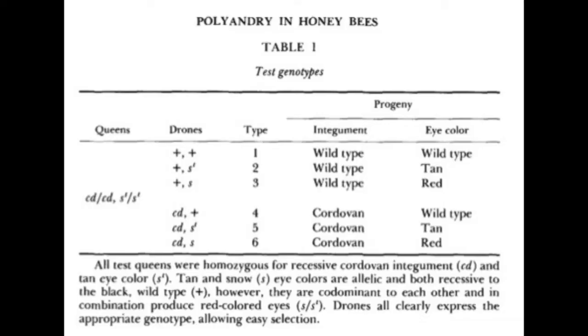Harry Laidlaw proves that polyandry in honeybees is a major cause of intracolony genetic diversity in his study. He tests the genetic variation by measuring the genetic relationship among the honeybees and makes a model of polyandry for the honeybees in his lab. Six types of drones differentiated by different genetic combinations are mated with one queen, which is mutated.